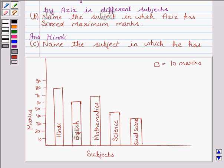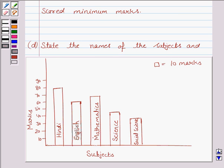Let us now discuss part C. It says, name the subject in which he has scored minimum marks. Now the marks shown by the smallest bar is the minimum marks and we see that in social science he has scored the minimum marks that is 40. So the answer is social science.